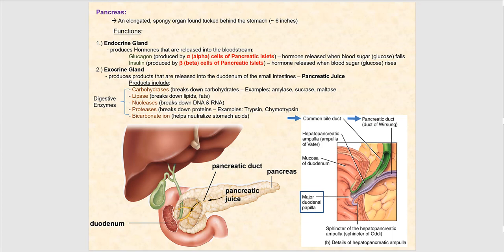Let's now discuss the pancreas. In addition to the salivary glands, the pancreas is an example of an accessory digestive organ. It is elongated and spongy, found tucked behind the stomach, and is approximately six inches in length.